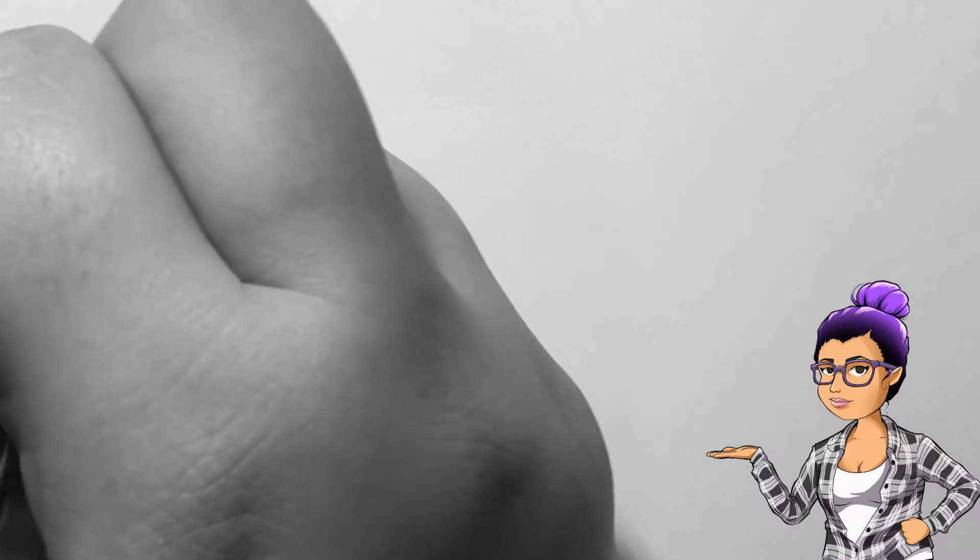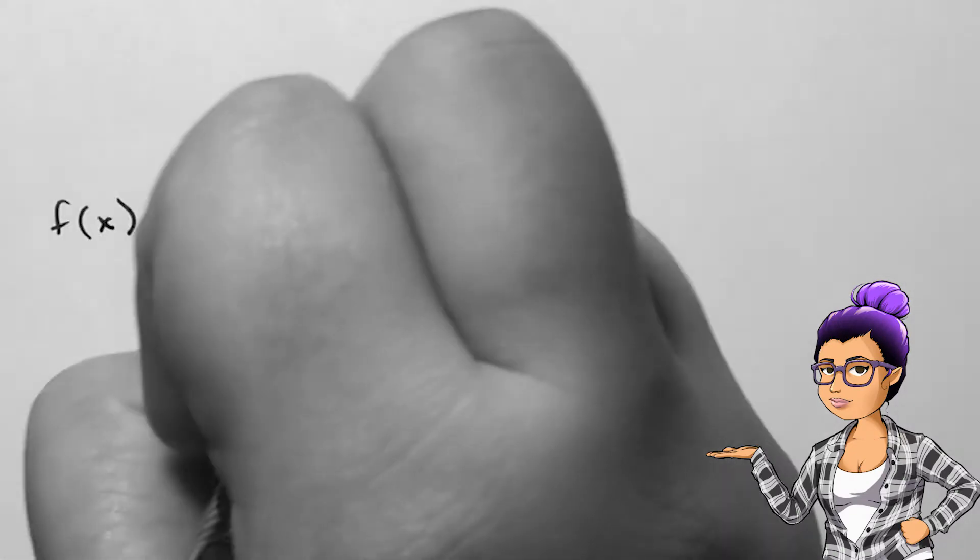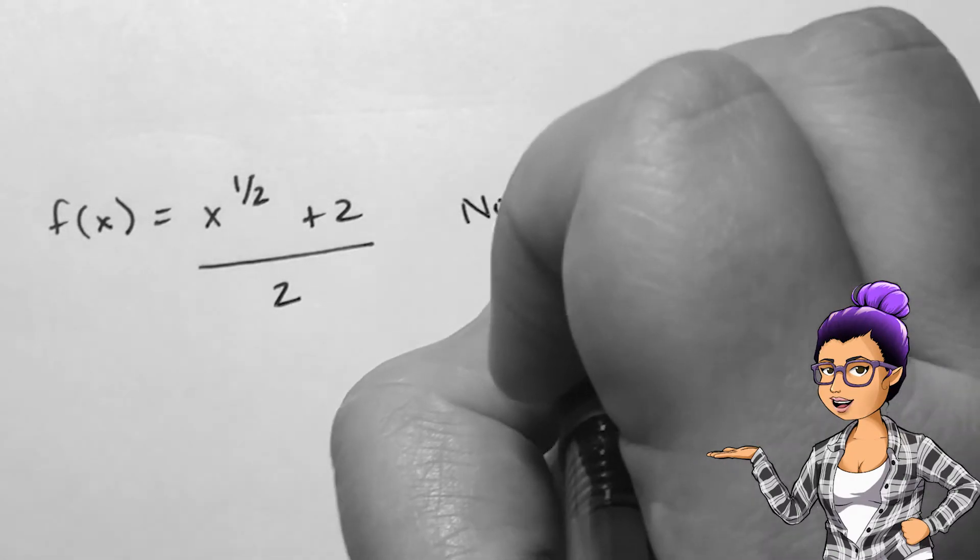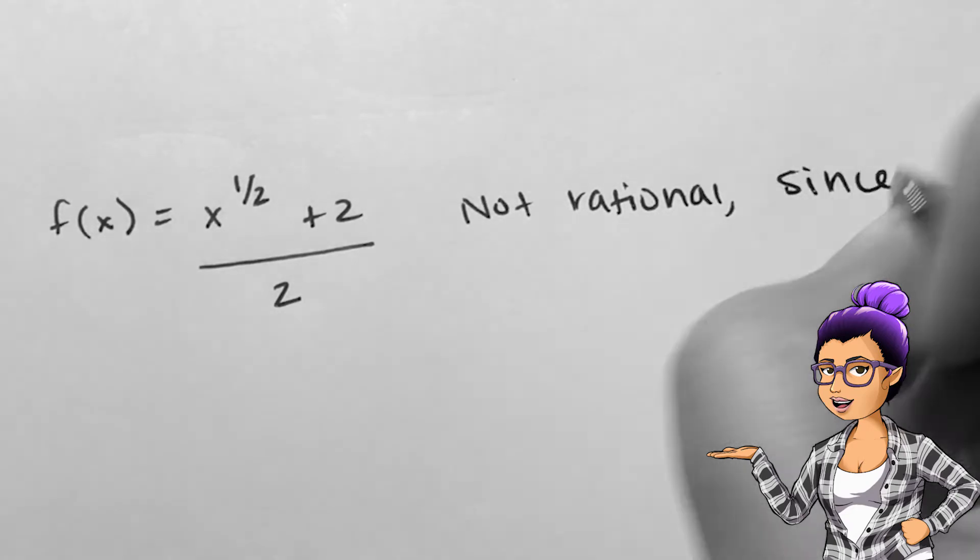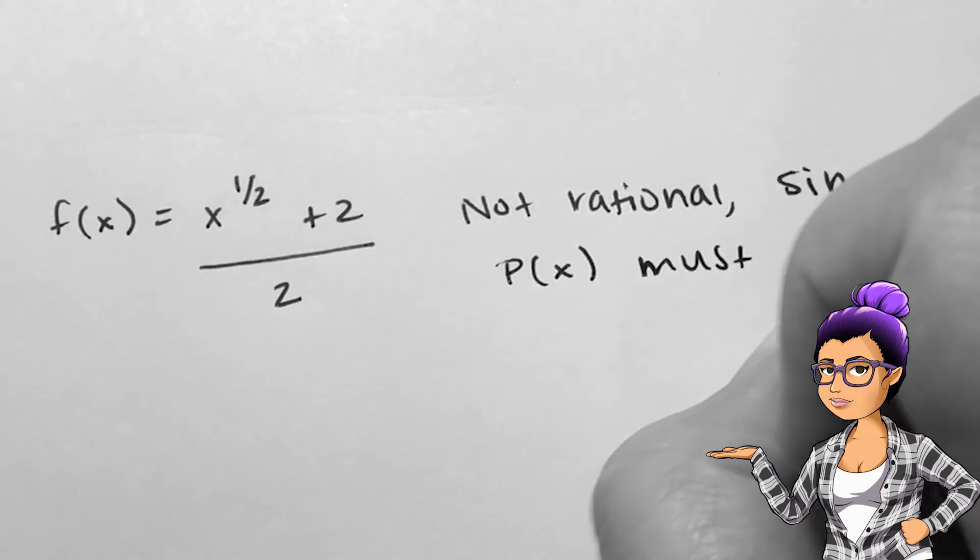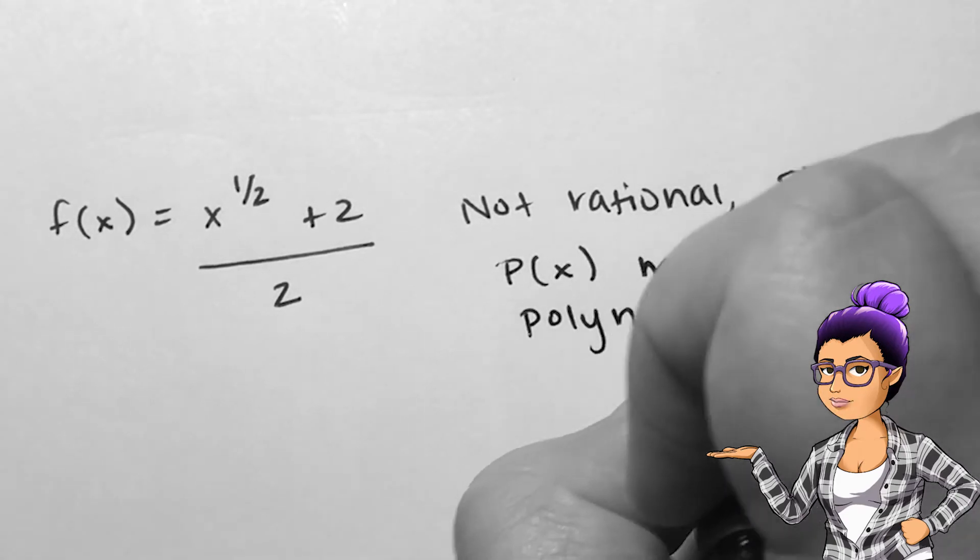If f of x is x to the 1 half plus 2 all over 2, we are looking at a square root function. Since the numerator is not a polynomial, this is not a rational function.